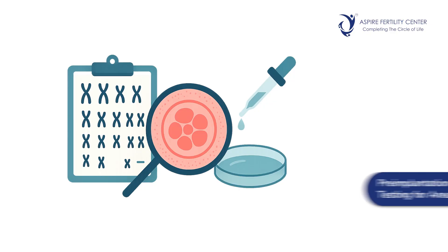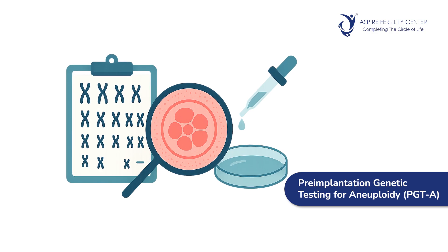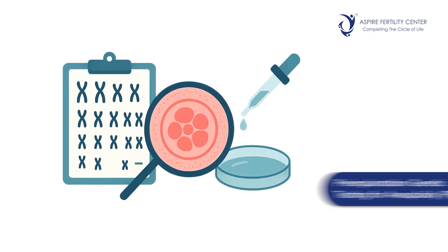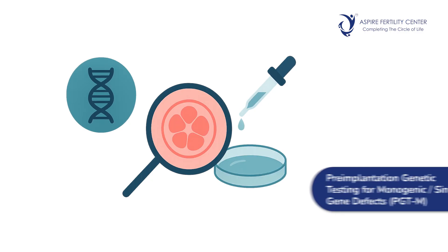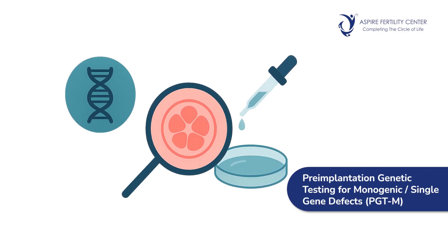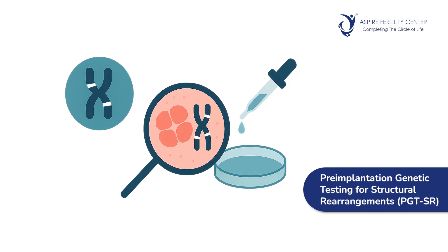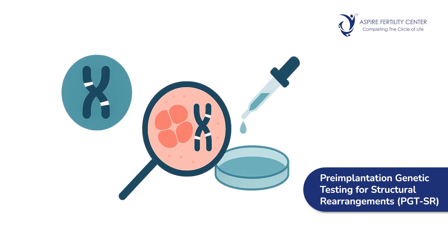In PGT, we have three types of tests. One is called PGTA — pre-implantation genetic testing for aneuploidy. The second is PGTM — pre-implantation genetic testing for a monogenic disorder. And then we have PGTSR — pre-implantation genetic testing for structural rearrangements. These three different kinds of tests are for three different kinds of abnormalities.